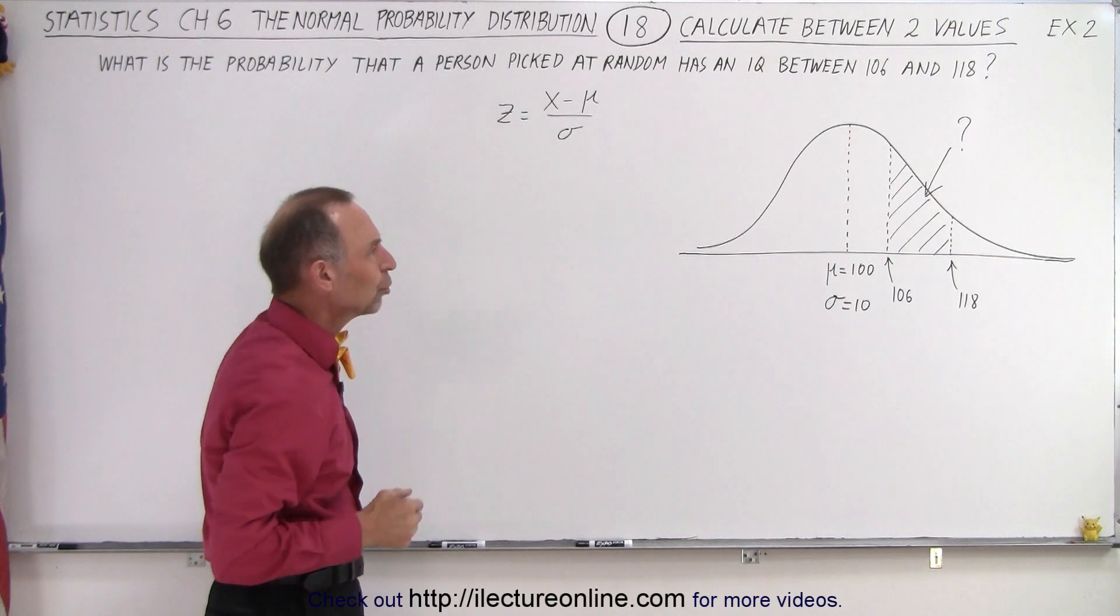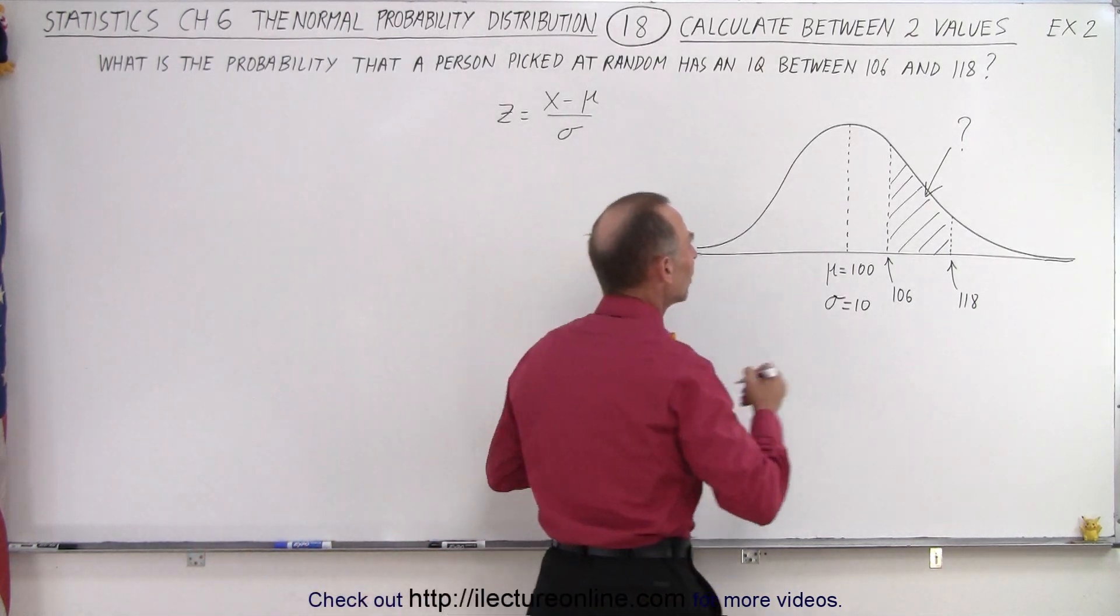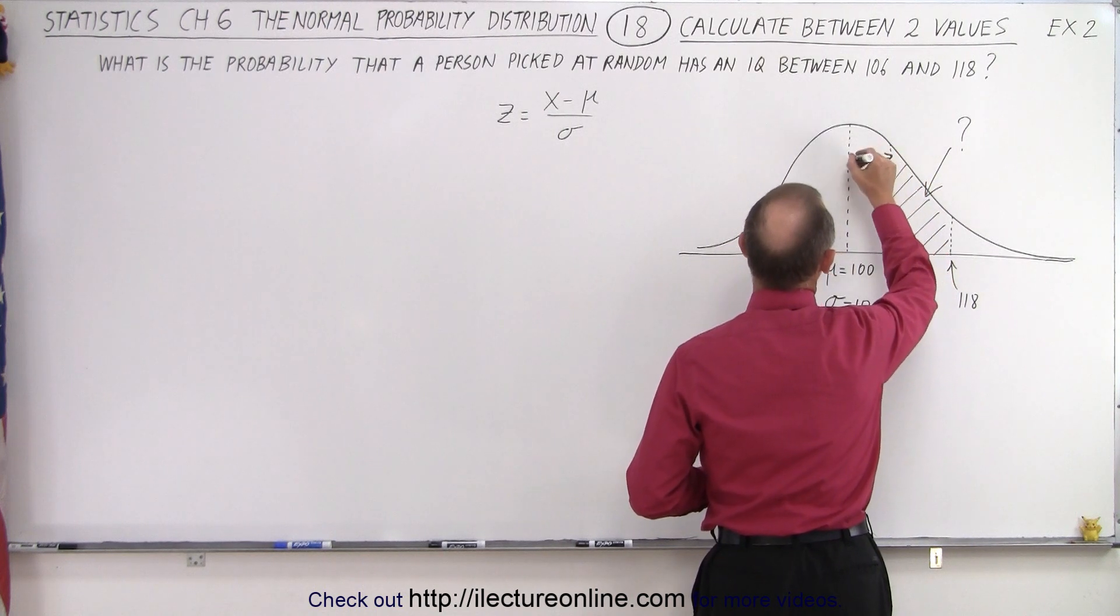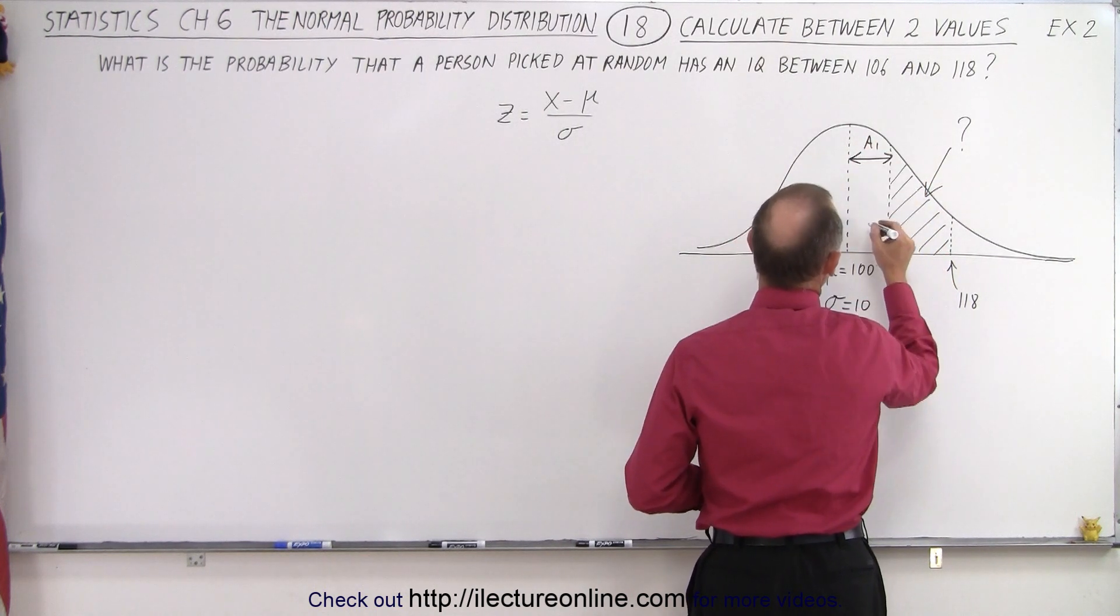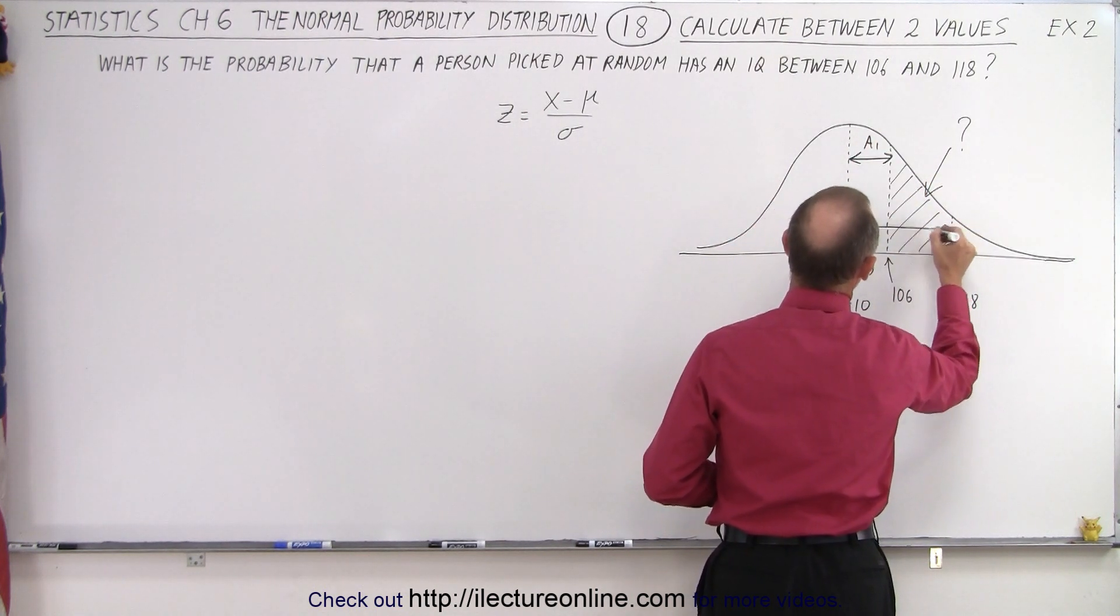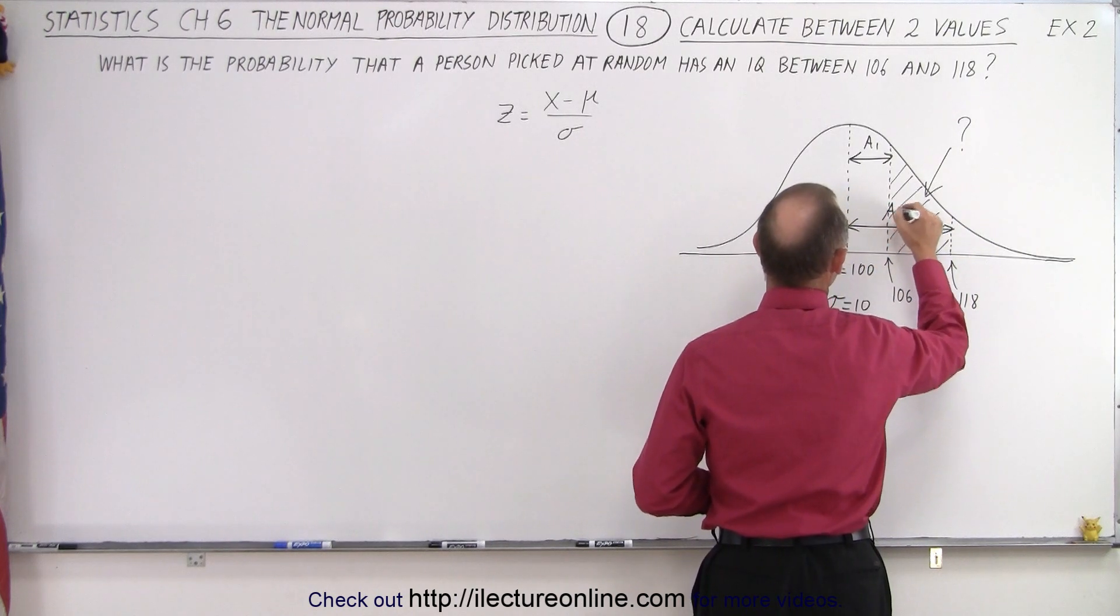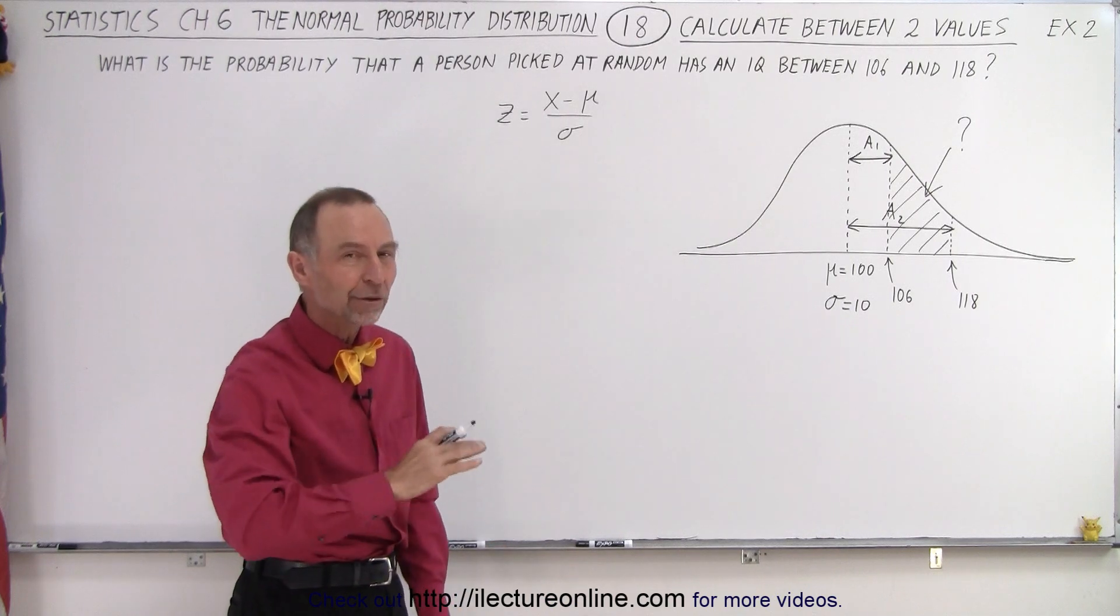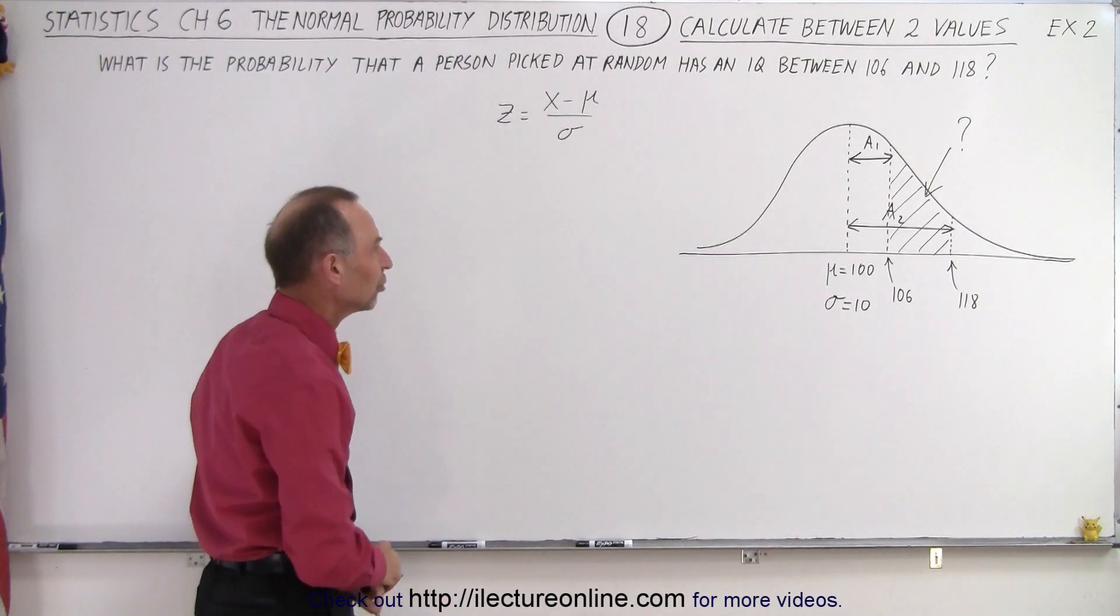All right, again what we should do is we should calculate the first area which is this area right here. Let's call this area 1 and then let's calculate the second area which is this area. Let's calculate area 2 and then to find the difference we're going to subtract A1 from A2. That's going to be the strategy.